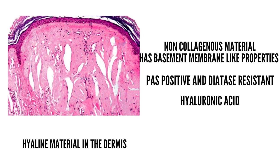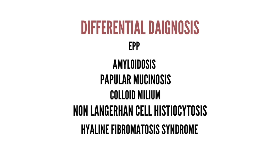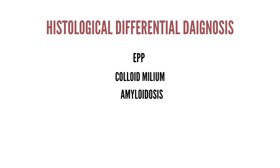The clinical differential diagnosis includes erythropoietic porphyria, amyloidosis, papular mucinosis, colloid milium, and non-Langerhans cell histiocytosis. In infants, hyaline fibromatosis syndrome — both juvenile hyaline fibromatosis and infantile systemic hyalinosis — needs to be considered; both are due to mutations in the gene encoding capillary morphogenesis protein 2. Histologically, the differential includes erythropoietic porphyria, colloid milium, and amyloidosis, where hyalinization is milder, more focal and superficial, and rarely involves eccrine glands. The deposition in colloid milium does not show the striking perivascular pattern seen in lipoid proteinosis.